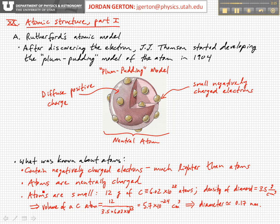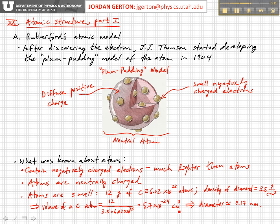They had already estimated atomic size. For example, if you took 12 grams of carbon, that's equal to 6 times 10 to the 23rd atoms — that's Avogadro's principle. They knew diamond was made out of carbon and that the density of diamond is 3.5 grams per cubic centimeter. Working that out, the volume of a carbon atom in diamond is about 5.7 times 10 to the minus 24th cubic centimeters, implying a diameter of about 0.2 nanometers — about two angstroms. So atoms are very, very small.